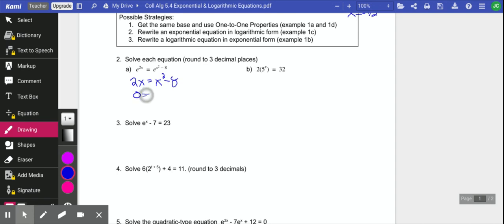I'm going to bring the 2x over to the other side. And this is just a quadratic. We're going to solve that by factoring. So x minus 4, x plus 2. So our solutions will be 4 and negative 2. So starting out with just the 1 to 1 property for that.